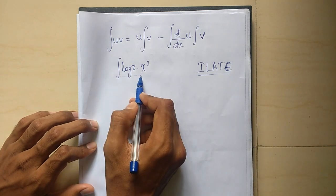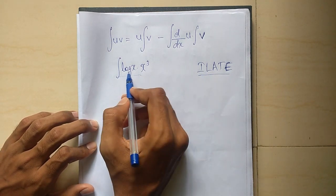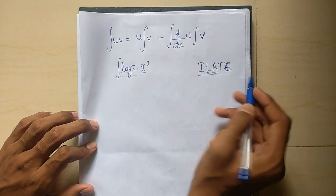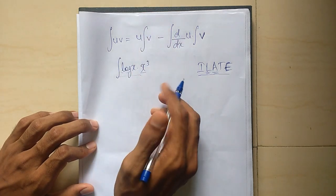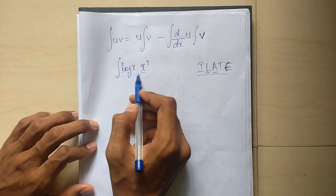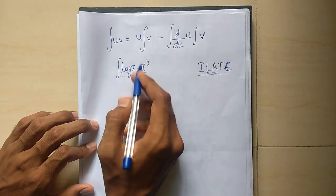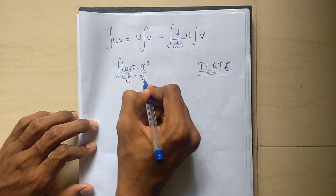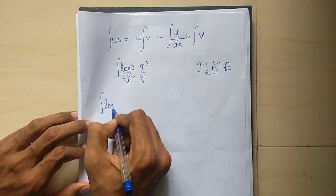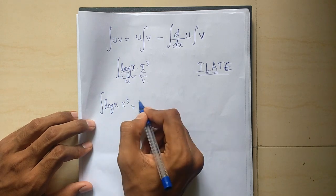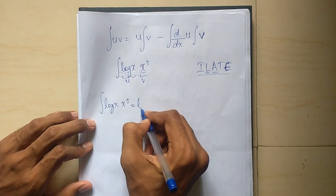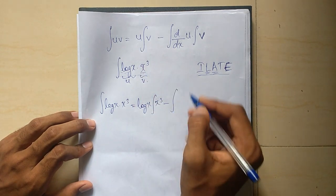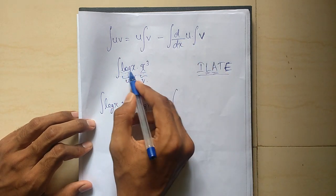We solve in the ILATE order. Logarithm comes before Algebra, so u is log x and v is x cubed. The integral becomes log x into integral of x cubed, minus integral of derivative of log x into integral of x cubed. The derivative of log x is 1 by x.